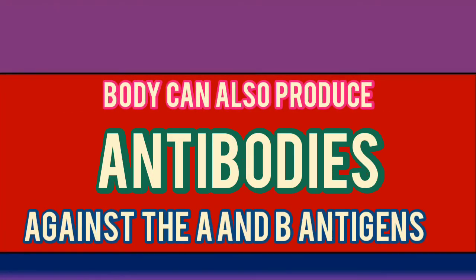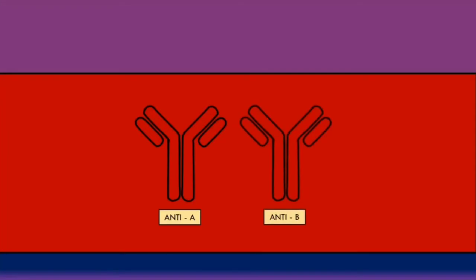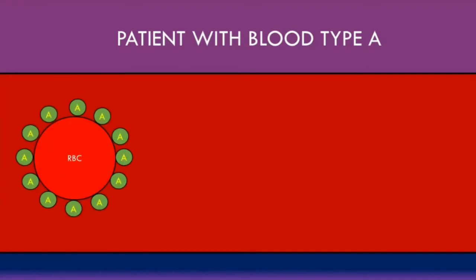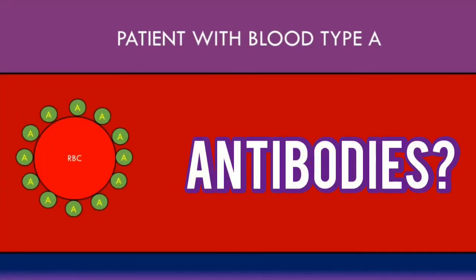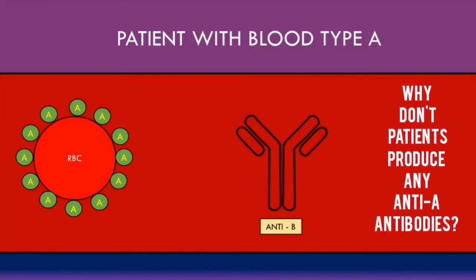We've discussed the antigens on the surface of the red blood cells and how they correspond to the specific ABO blood group. It's also important to realize that the body can produce antibodies against the A and B antigens. Antibodies produced against the A antigens are called anti-A antibodies, and antibodies produced against the B antigens are called anti-B antibodies. The presence of these antibodies varies across the different ABO blood groups. For a patient with blood type A, they will produce anti-B antibodies but no anti-A antibodies — why is this the case?